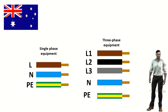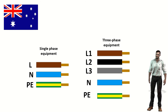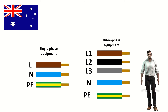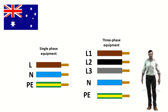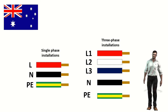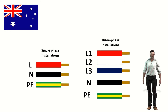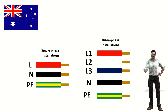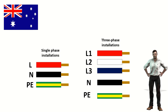Two color codes coexist in Australia: one for equipment cabling and one for facility cabling. The coding for equipment wiring follows the international IEC standard, using brown and blue for single-phase equipment for the phase and neutral wire respectively. In three-phase equipment the colors brown, black and gray are used for the phases and blue for the neutral. The ground wire is green with a yellow stripe. For installations in buildings, another coding is used: red for the phase cable and black for the neutral cable in single-phase installations. For three-phase installations: red for phase one, white for phase two and dark blue for phase three. The neutral is black, and the protective earth wire is green with a yellow stripe.